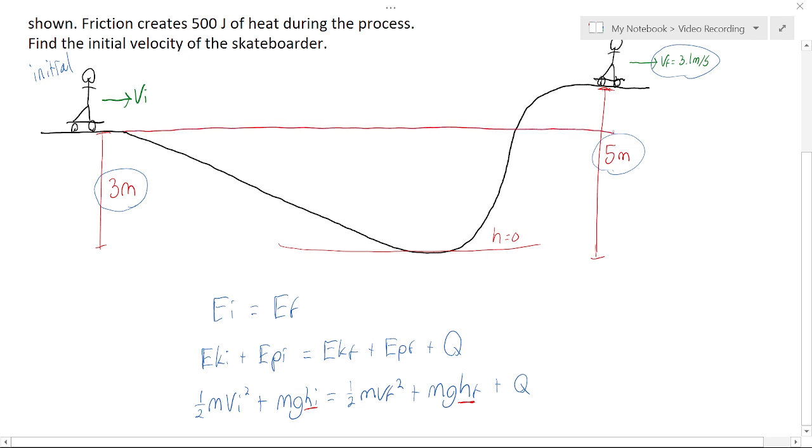Now we could instead measure our height from here. This is called changing our reference point. Now my diagram is not very to scale, unfortunately, but if we say this height is zero, then our new final height becomes two instead of five, because we've raised our reference point by three meters.